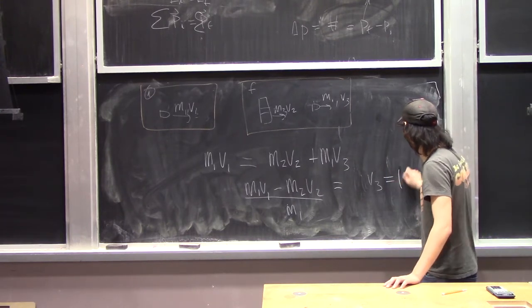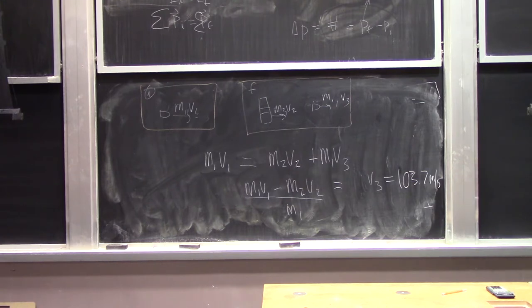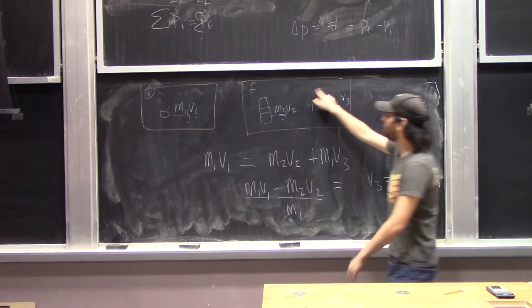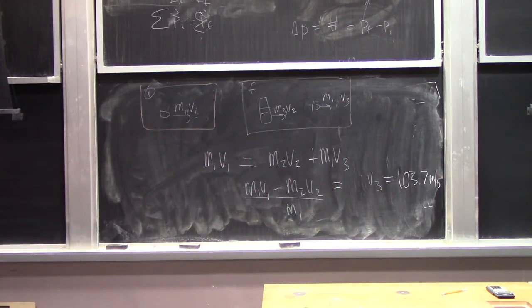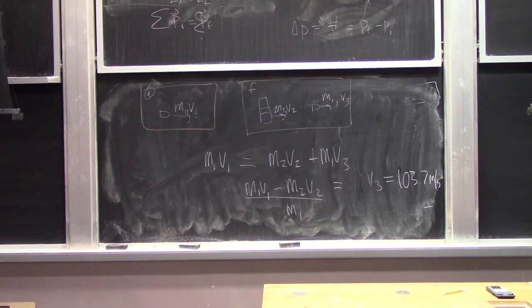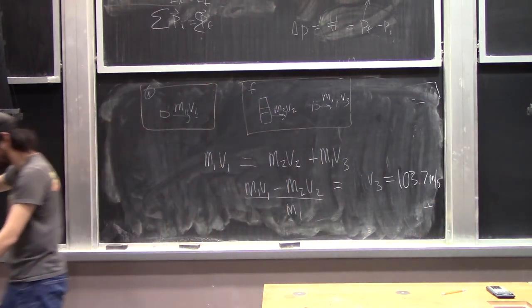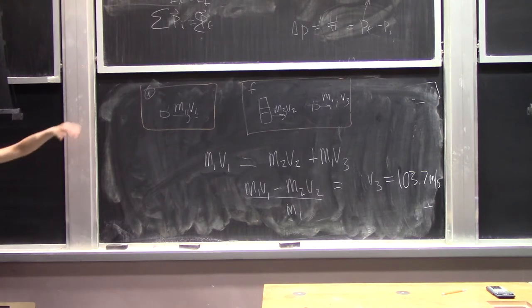Plugging in the numbers gives the bullet's exit velocity as approximately 103.7 meters per second. We can sanity-check this: the bullet started at 650 m/s, so 103.7 m/s is appropriately smaller. If the answer had come out larger than 650 m/s, we'd know something was wrong.